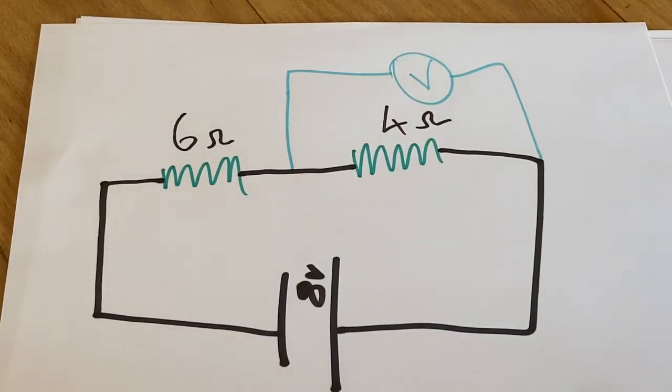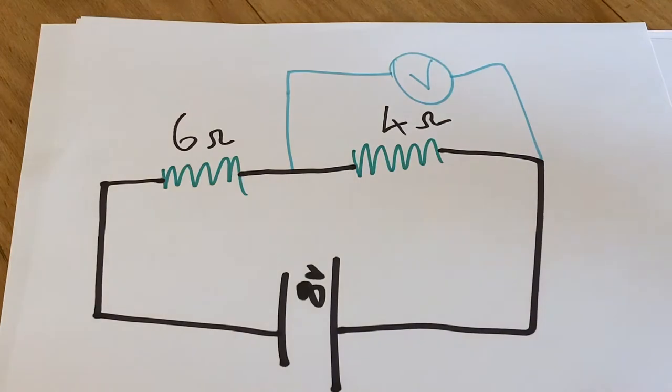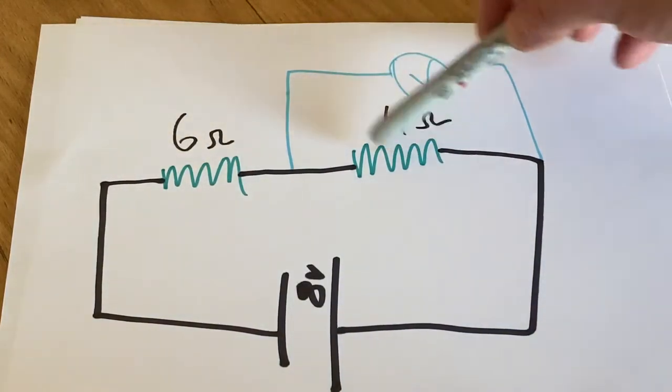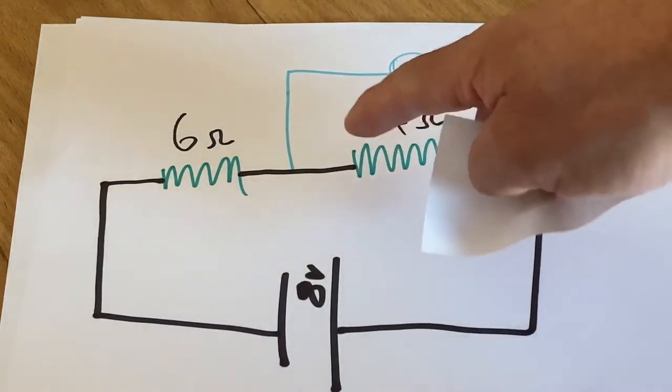Okay, so part two of that question asks what would happen if this resistor here went open circuit. What an open circuit means is a break in the circuit. Let's say the resistor has burnt out, or these could be light bulbs. Think of them as being light bulbs, and if the light bulb has blown, then the filament inside the light bulb was broken.